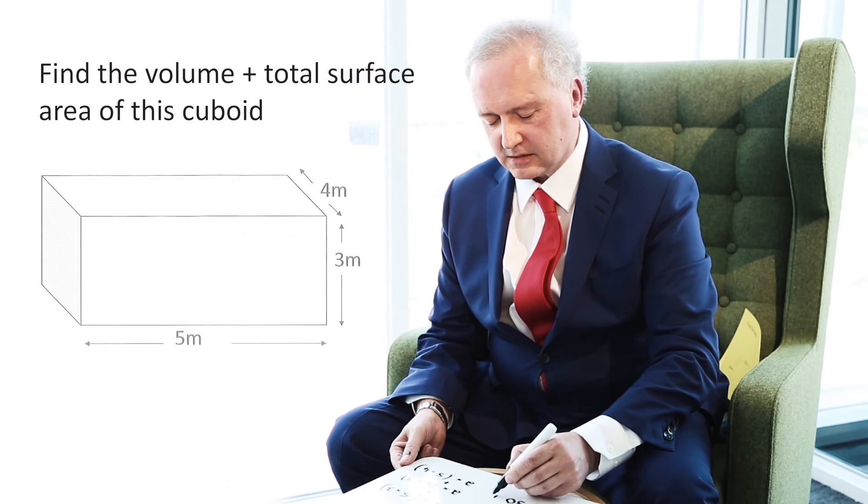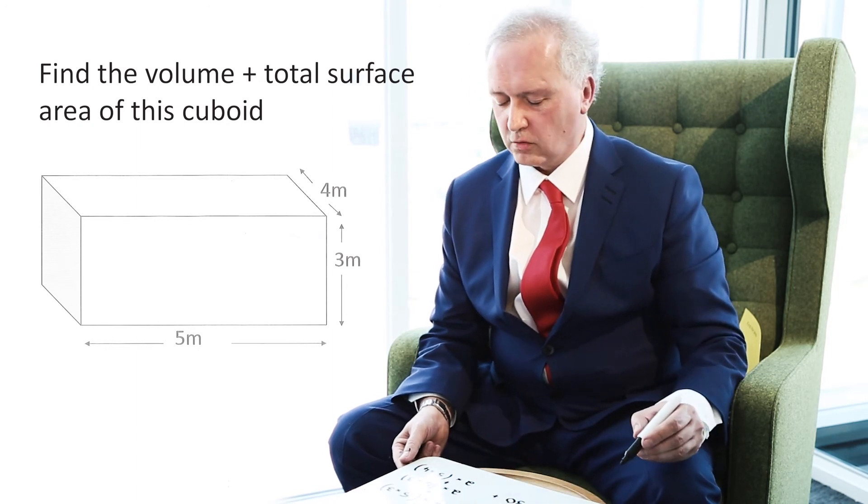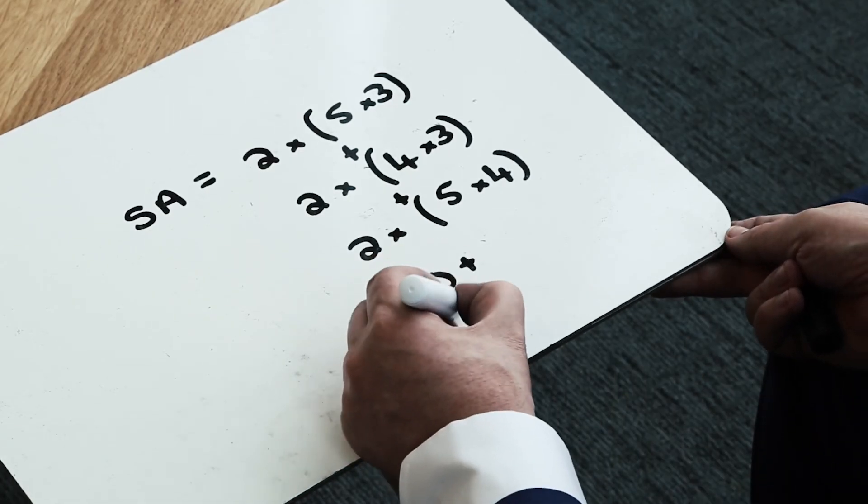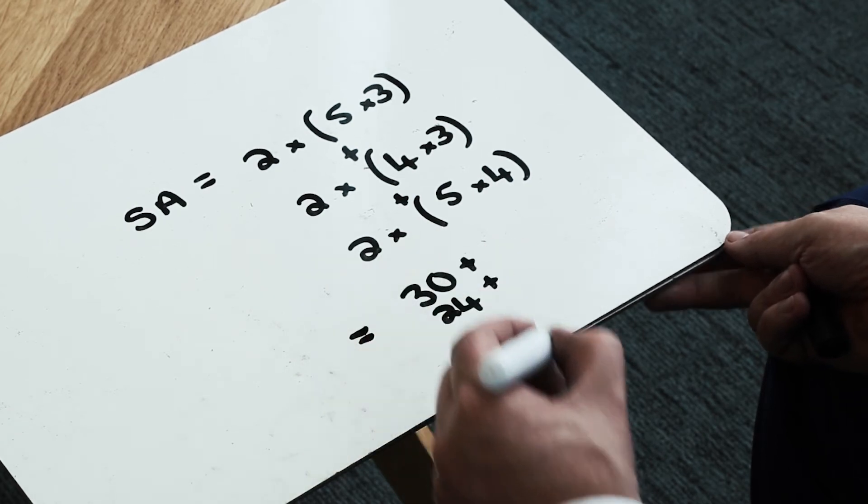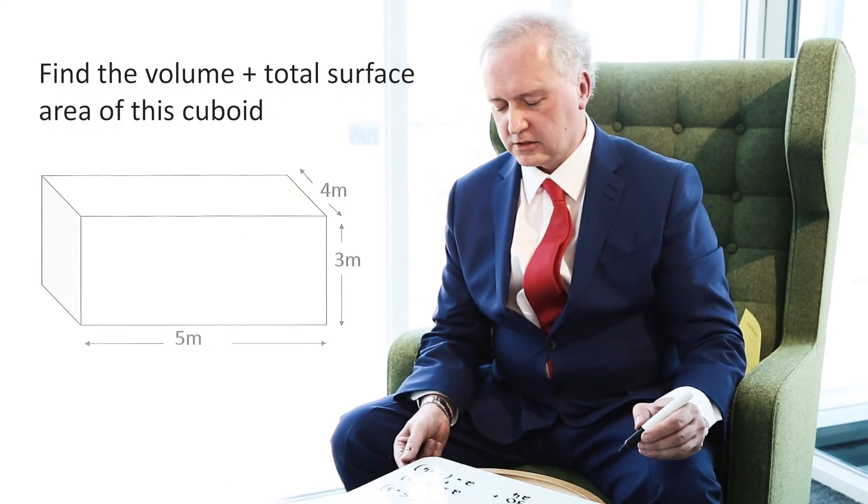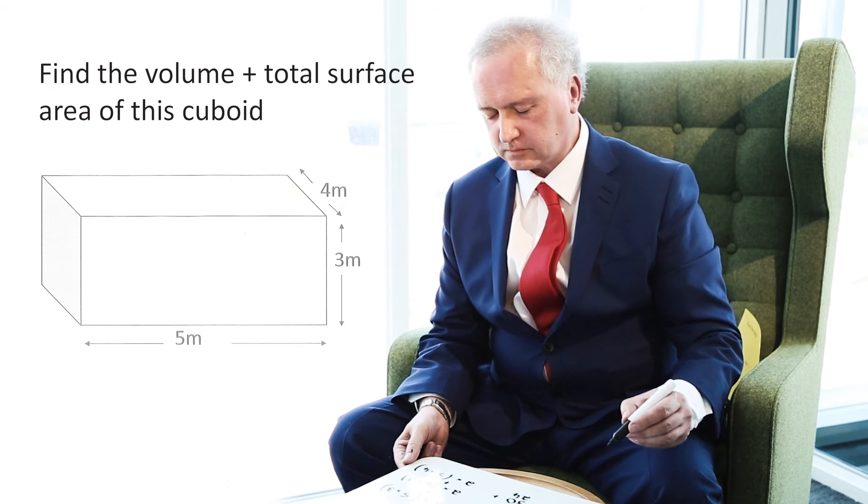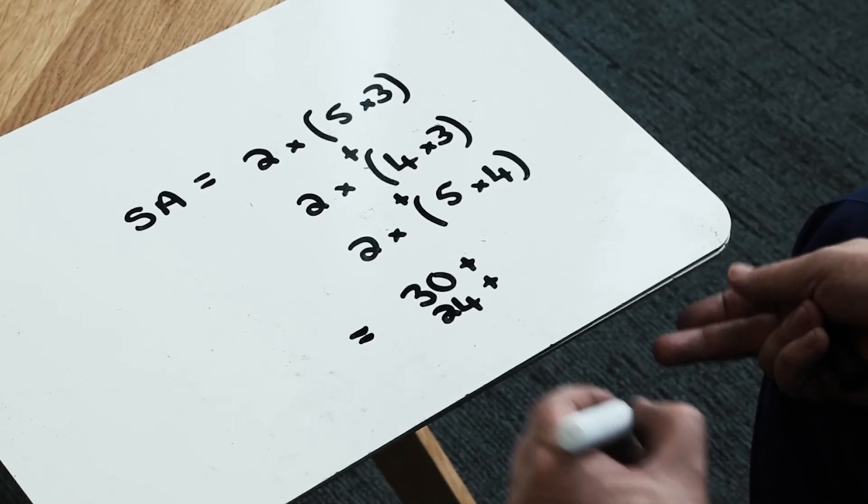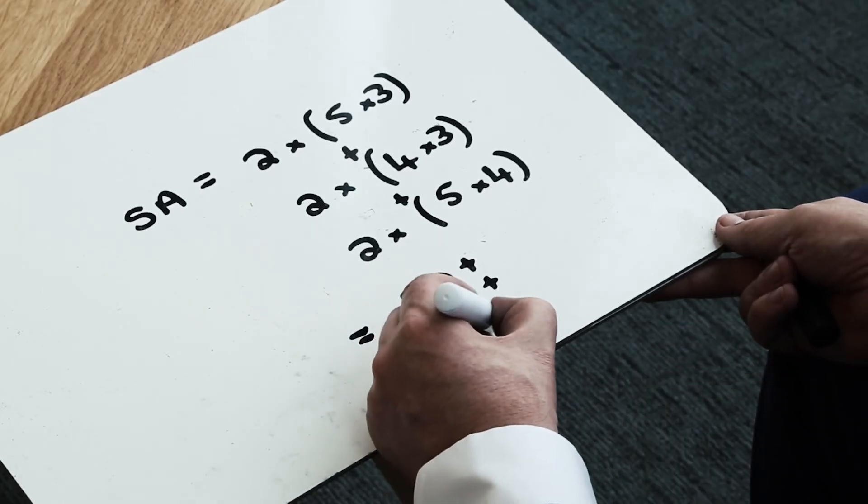I'm now going to add to that 30 two lots of the 4 by 3s. And 4 by 3 is 12. And 2 times 12 is 24. Then I'm going to add 2 lots of 5 by 4s. 5 times 4 is 20. And 2 lots of 20 gives me my 40.